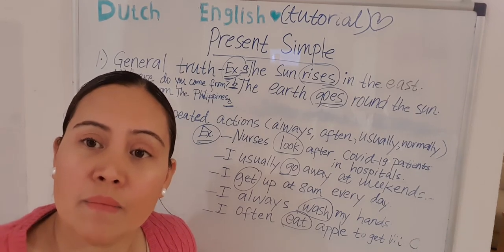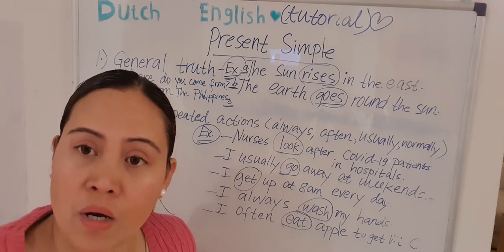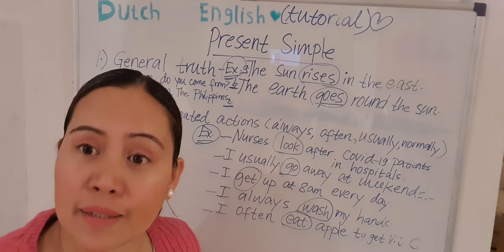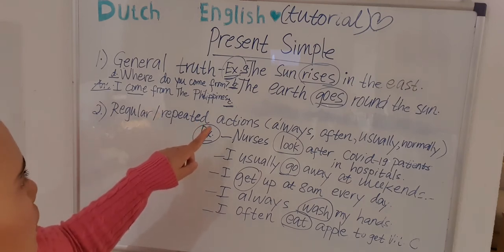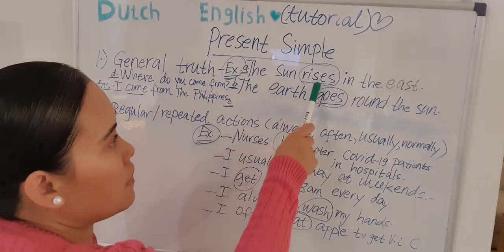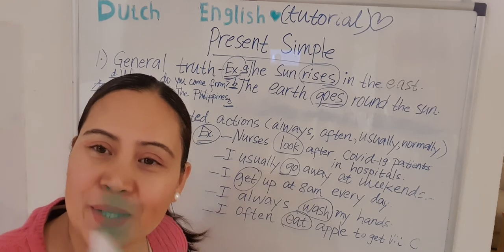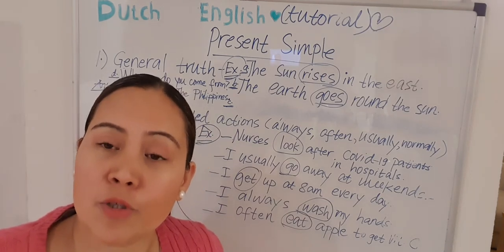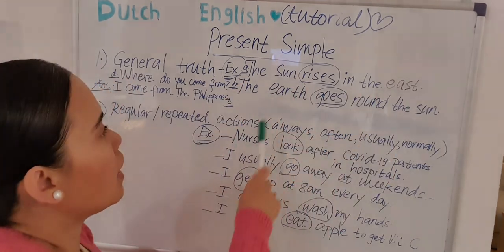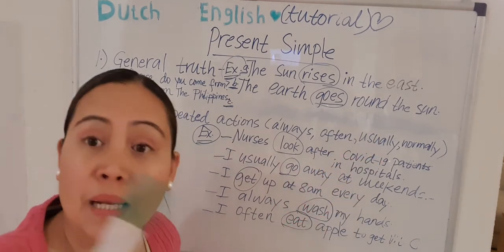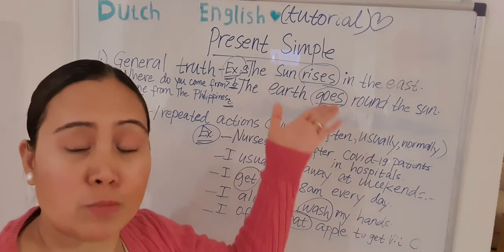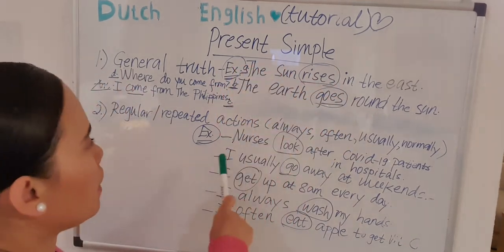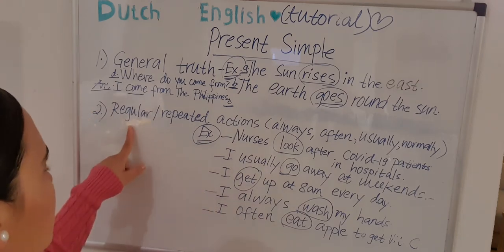It is wrong to say 'I came from the Philippines' because 'came' is past tense. Even if you are already here in Europe, the general truth is that you really are from the Philippines, so we always use present simple. Next example: 'The sun rises in the east' — never in the north. That is a general truth. Another: 'The earth goes around the sun' — this always happens, it's repeated, it's a fact we cannot change, so it uses present simple.